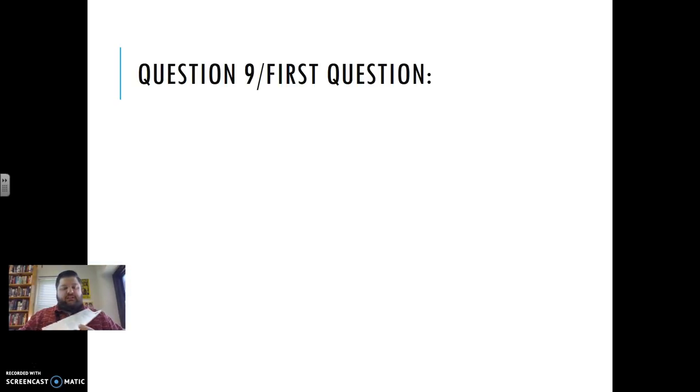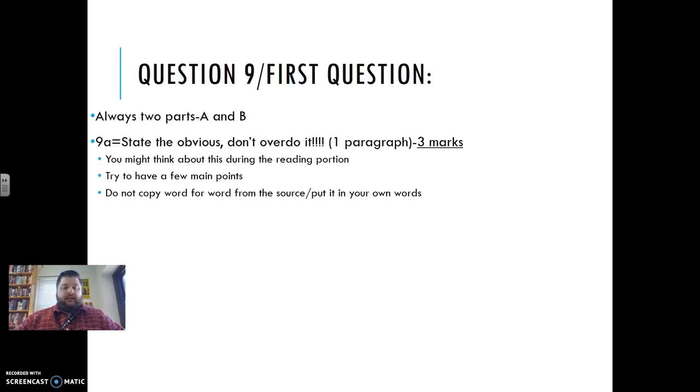But the first question for all of those sections is always going to be the same type of question. It's always in two parts, A and B. It is always 9A, for instance, for move to global war on this exam, which was last year's exam. It is what, according to source K, were the factors contributing to tensions between Japan and the U.S. So it's a pretty obvious, just a straight-up what question, one paragraph suffices. It's only worth three marks. Think about it during the reading portion. Try and have a few main points. You know, don't copy word for word from the source, but stick pretty close to what it says. Try and have about three main points. So for that one, what, according to source K, were the factors contributing to tensions between Japan and the U.S.? I would just say the factors contributing to tensions between Japan and the U.S., according to source K, are, and then give three things the source says.